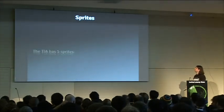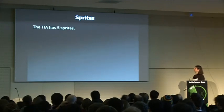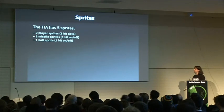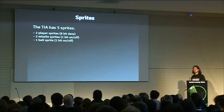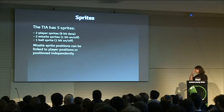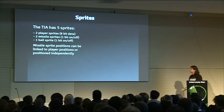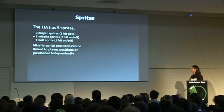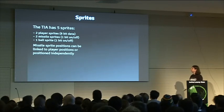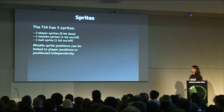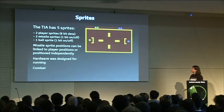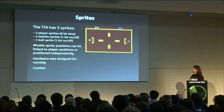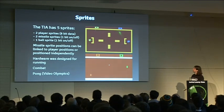The TIA has five sprites: two player sprites at 8 bits wide, two missile sprites that are either on or off, and one ball sprite also just on or off. The missile sprite positions can be locked to the player position so you don't have to use separate missile position registers. The hardware was constructed for running Combat and Pong — you've got the player, the missile sprite, another missile sprite, the other player, and the ball sprite.